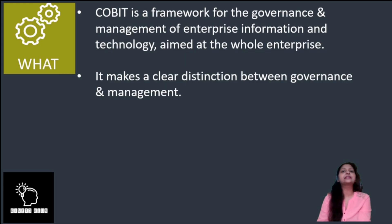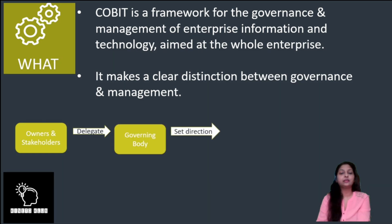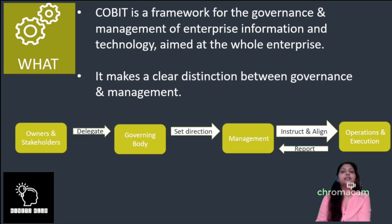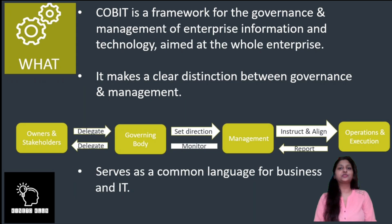COBIT also makes a clear distinction between governance and management. As we see in the figure, the owners and stakeholders' needs, conditions, and options are put forward to the governing body, which evaluates them according to agreed enterprise objectives and sets direction based on prioritisation and decision-making — the responsibility of the board of directors. Work is then delegated to the CEO and executive management, and operations report back to the governing body, which delivers outcomes to owners and stakeholders. Hence COBIT serves as a common language between business and IT.